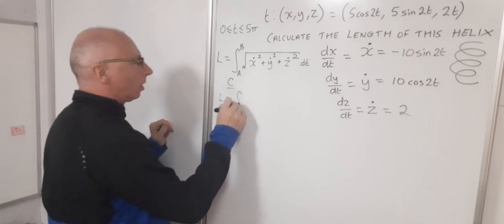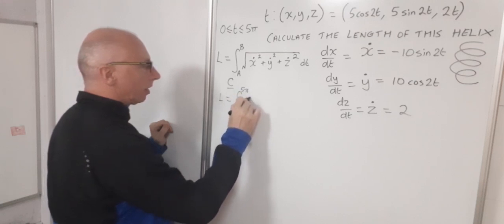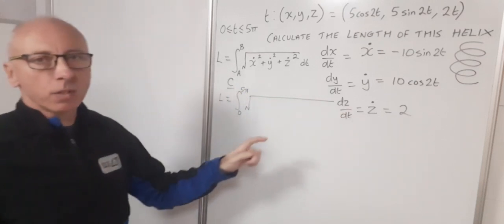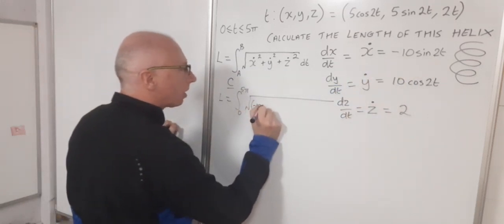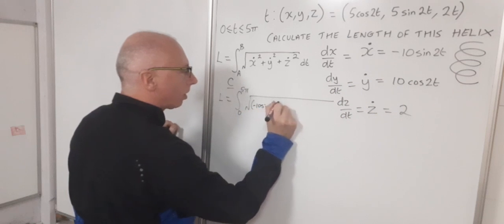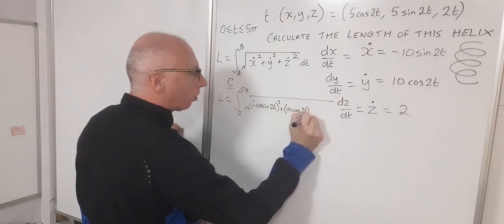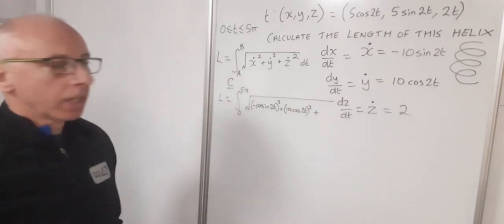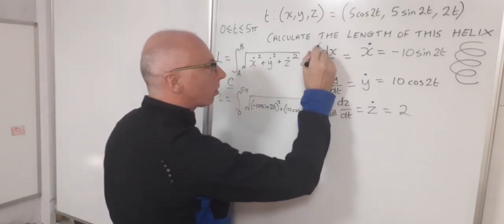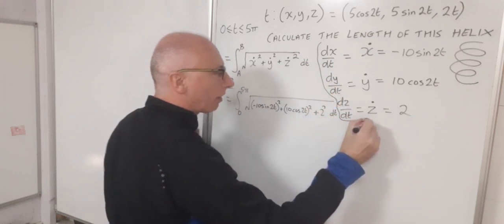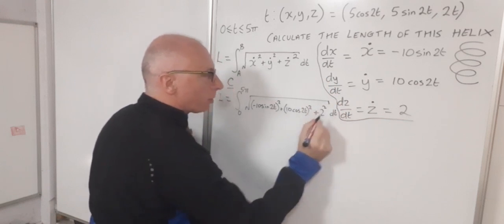So the length will equal zero to five pi. And then what we need to do now is put in the values of our derivatives. Minus 10sin(2t), all squared. And then the next one is 10cos(2t), all squared. And then this one here is just two, so it's just two squared. And then that's dt. Keeping these all separate in our calculations. Now this dt obviously is not in the square root, so I just put a line down for that.